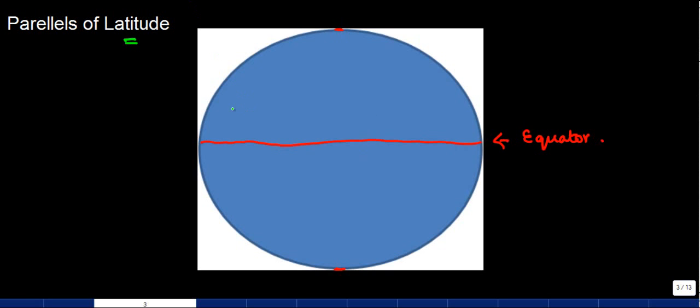Then any line which is parallel to this equator and is basically used for referencing a particular location, these lines are basically referred to as parallels of latitude. All of them.